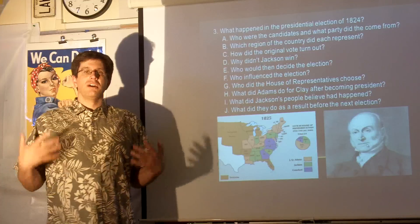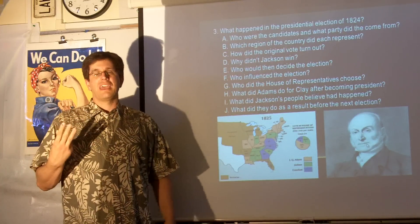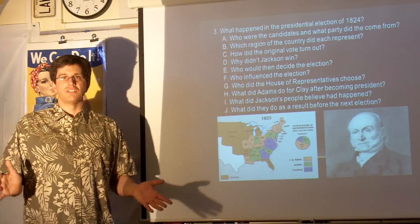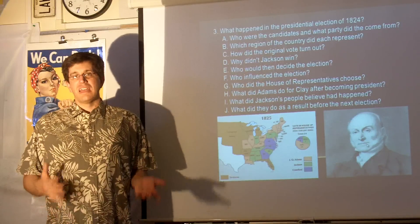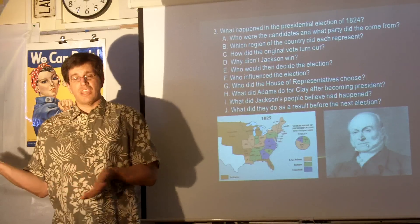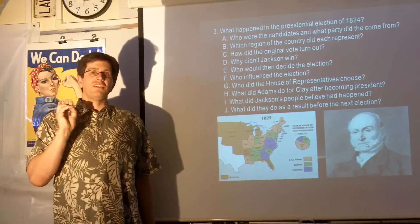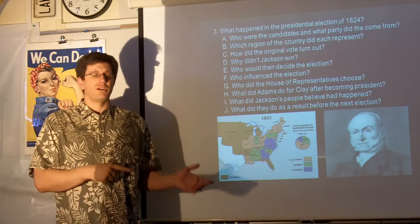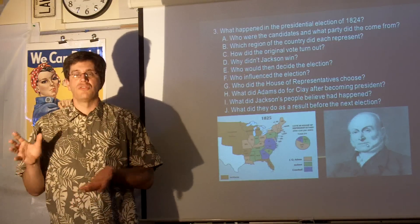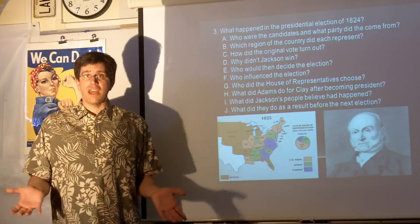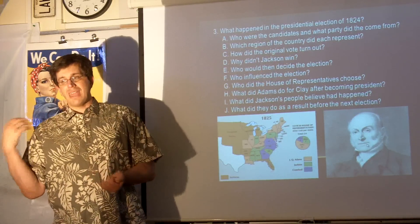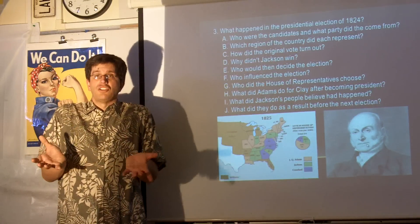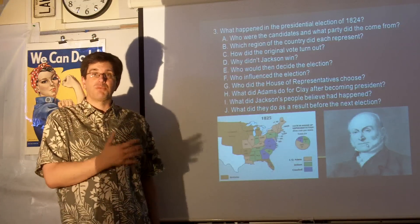According to the constitutional structure, the top three candidates advance if no one has a majority. So it went into the House of Representatives, where it was one vote per state. Henry Clay was eliminated. He told his supporters to vote for John Quincy Adams, not Andrew Jackson. Adams's supporters plus Clay's supporters made a large enough majority that John Quincy Adams became president.